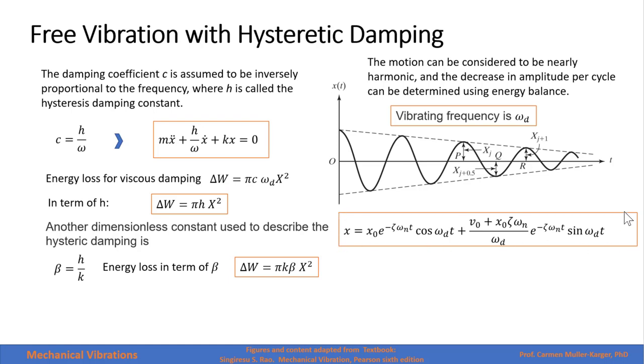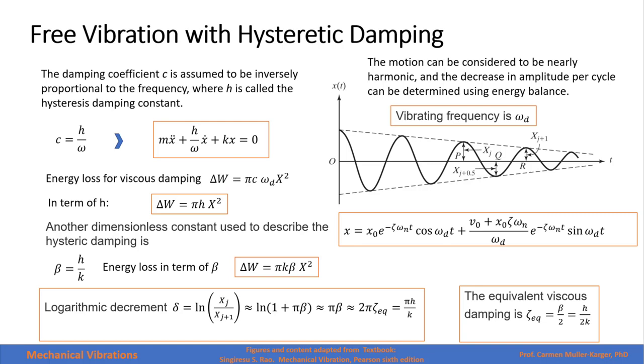The logarithm of two consecutive amplitudes can be approximated equals to logarithm of 1 plus πβ, which is approximated to πβ, and this approximated to 2πζ equivalent.